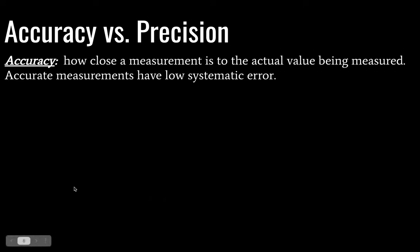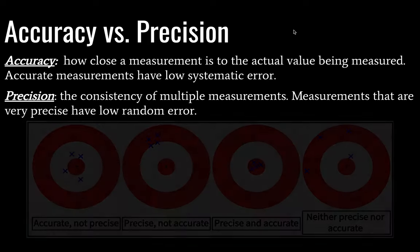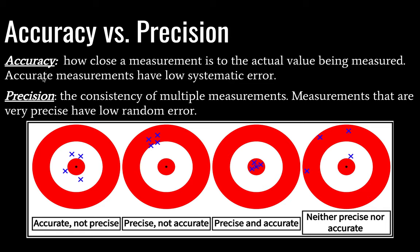Let's talk about accuracy versus precision. Accuracy is how close a measurement is to the actual value being measured — accurate measurements will have low systematic error. Precision is given by the consistency of multiple measurements — measurements that are very precise have low random error. These are often shown using target diagrams. In the first example, measurements are clustered together but not close to the center — so we have precision but not accuracy. In another, we have both precision and accuracy, which is ideally what you want. The worst outcome is neither precise nor accurate.